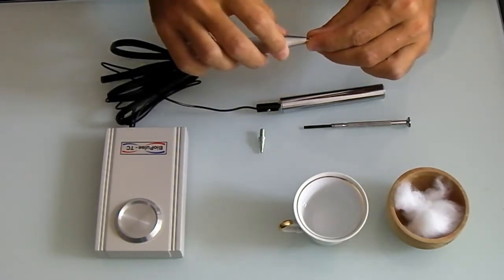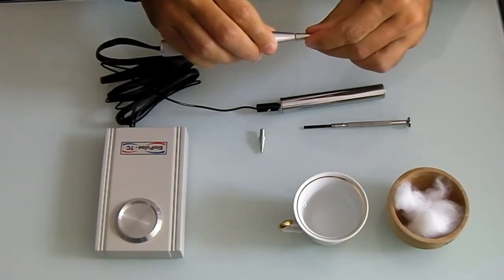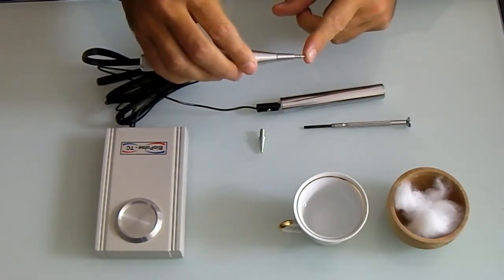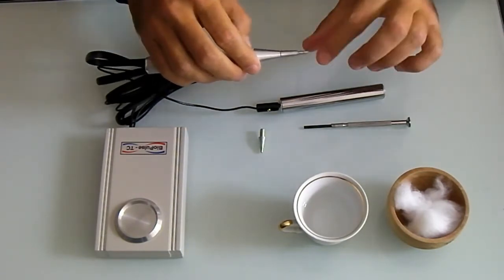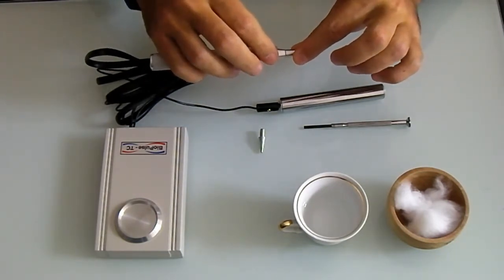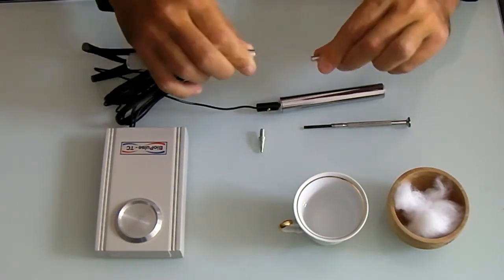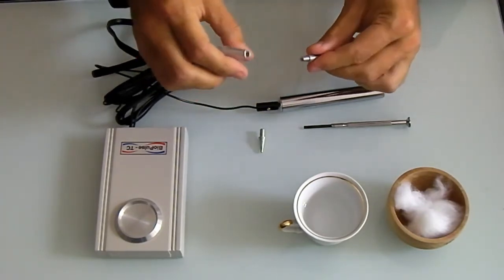If you use another type of testing for EAV or test acupuncture points, for example, this kind of tip has a spring loader with a red mark on its end to help you control the pressing on each point.